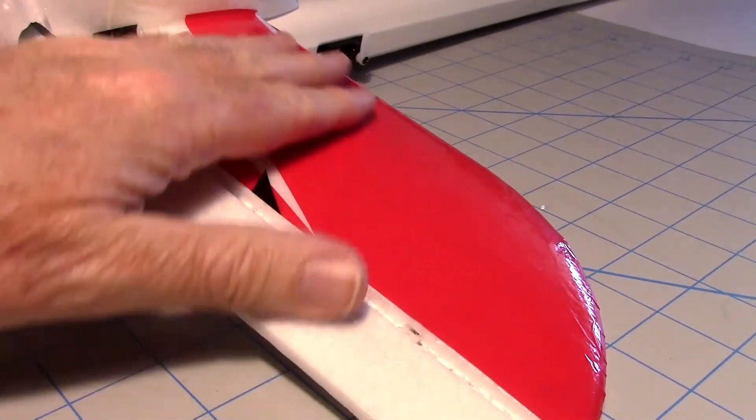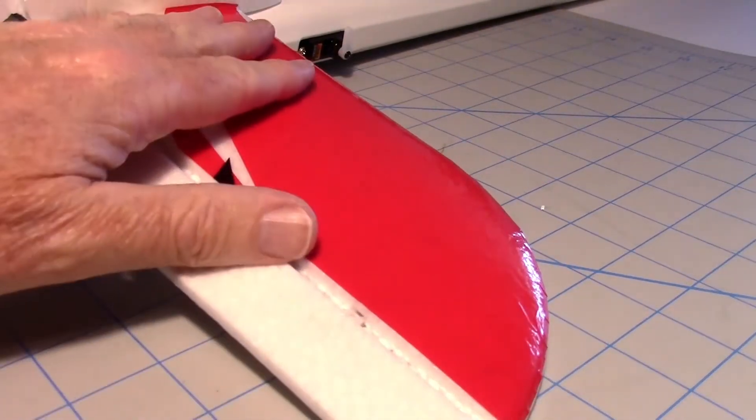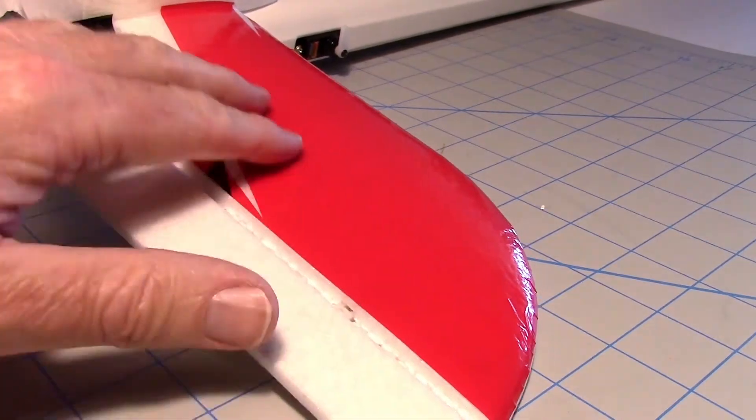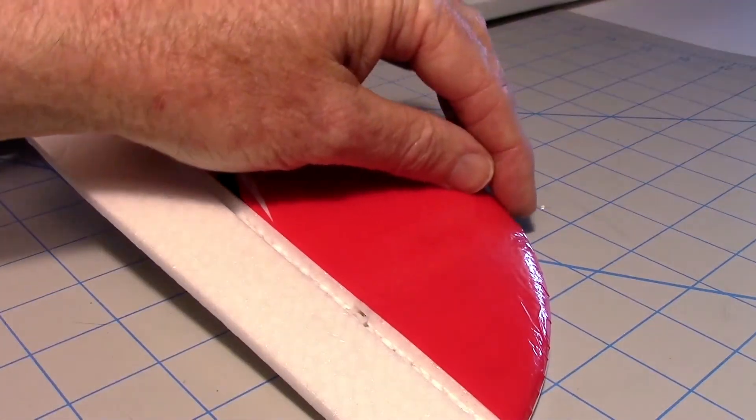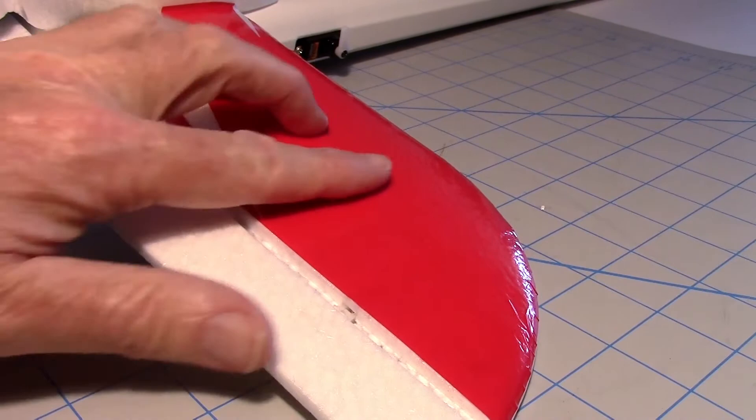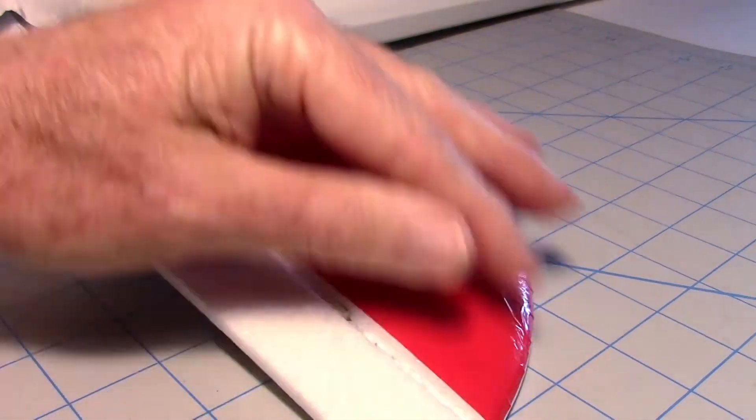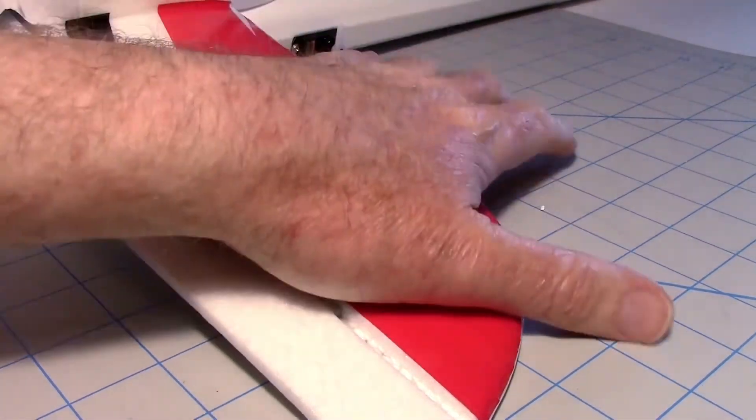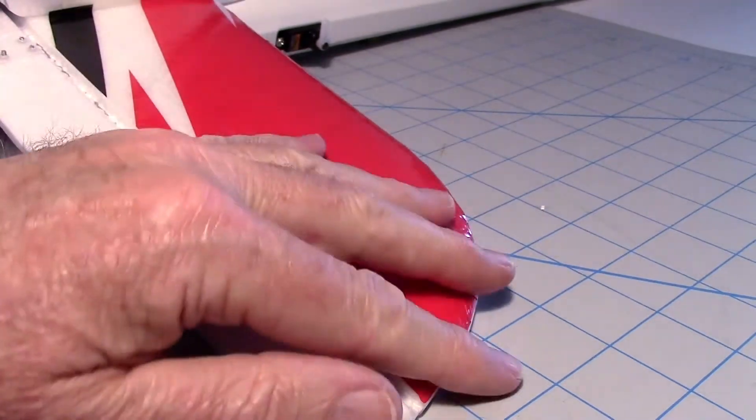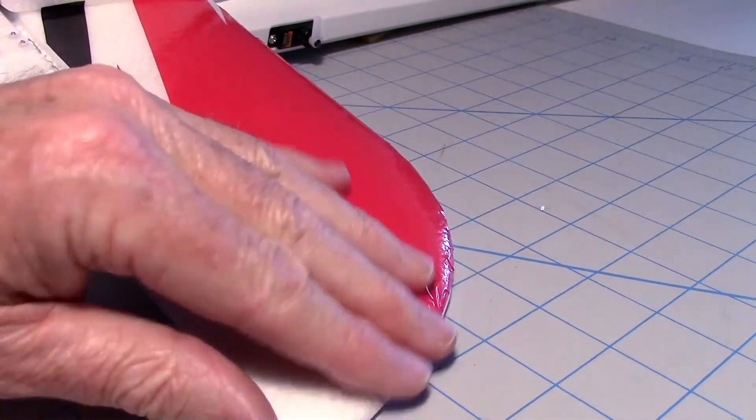The laminating film really made putting the decals on easier because if I got them on with a wrinkle, I could actually peel the decal back from the laminating film, take out the wrinkle, and lay it back down. It really sticks good to the laminating film yet can be peeled back and reapplied for a few minutes. It came out pretty smooth.